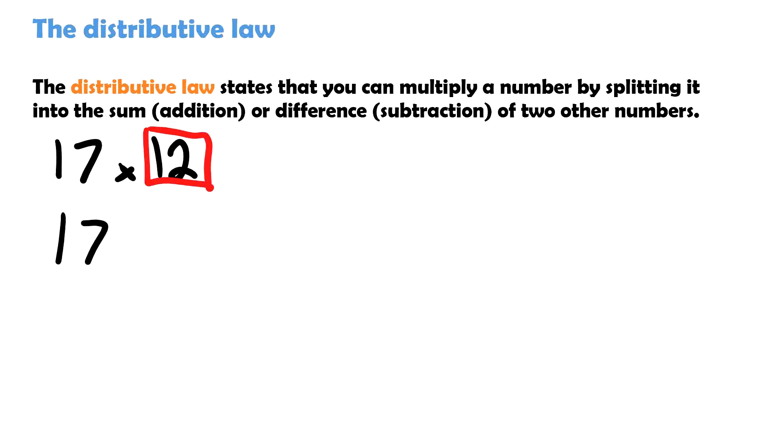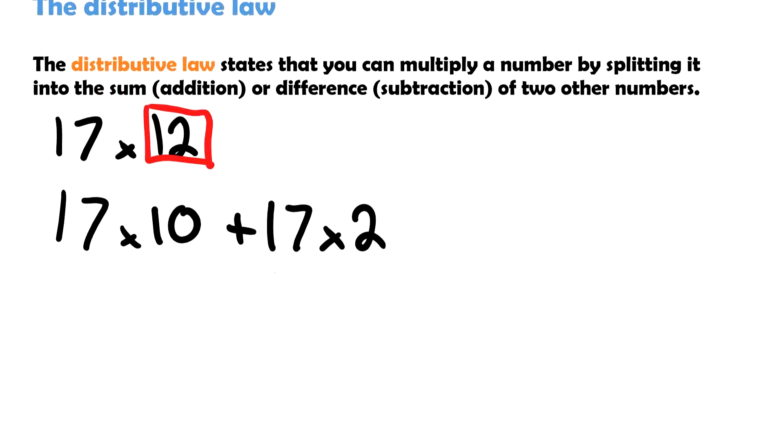What that means is I can get 17 times 10 plus 17 times 2, because these are smaller numbers and they're a little bit easier to solve mentally.